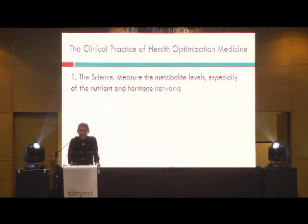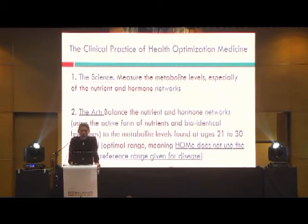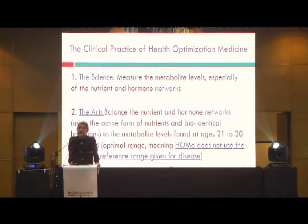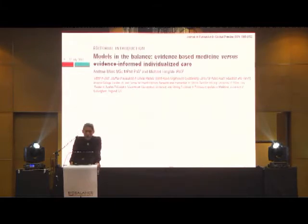The clinical practice of health optimization medicine: the science is to measure the metabolite levels, especially of the nutrient and hormone networks. The art is to balance the hormone and nutrient networks using the active form of the nutrients and bioidentical hormones, to the metabolite levels found at ages 21 to 30 years old — the optimal range. HOM does not use the standard reference range for a given disease. I'm not looking for normal. Normal is a survival value. What I want is an optimal value.